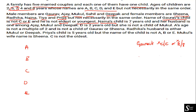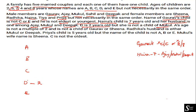Next clue: Naina's child is 7 years old, and her husband is one among Ajay, Mukul, and Deepak. Another clue: D is 2 years old — that's a direct statement — and D is not a child of Mukul.